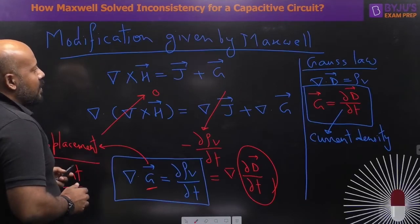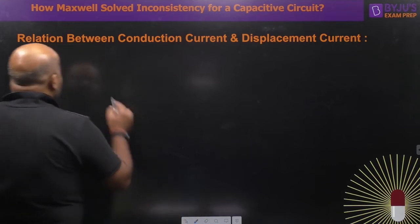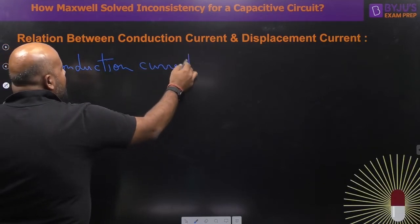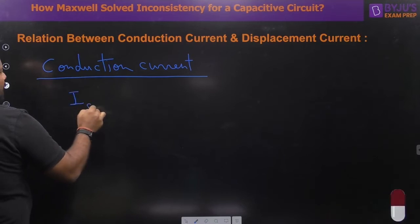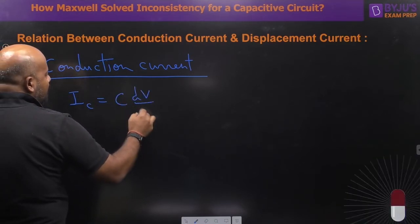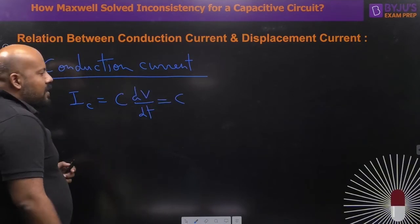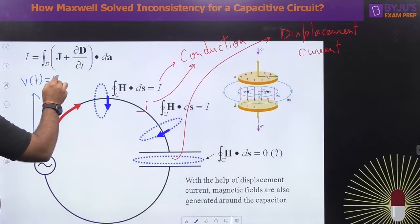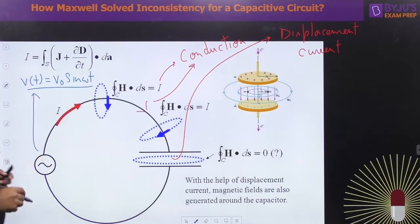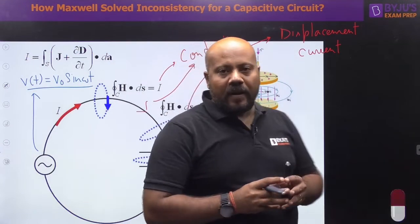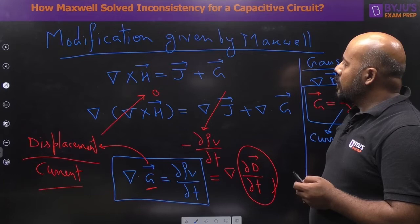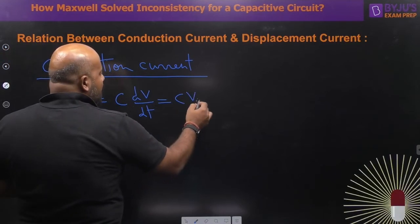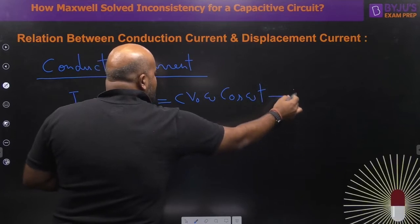For the same circuit, the conduction current I can write as C·dV/dt. Suppose this voltage source is given as V₀ sin(ωt) — a sinusoidal time-varying voltage source. So if you write the conduction current: C·dV/dt, and V = V₀ sin(ωt), differentiating gives: Ic = C·V₀·ω·cos(ωt). Call this equation number one.